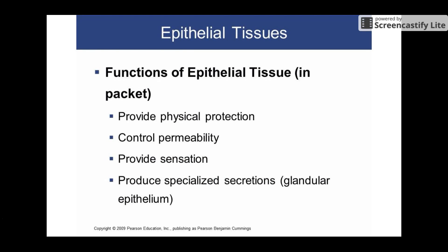In terms of functions, they vary a lot depending on the epithelial tissue. Some are really permeable, some have almost no permeability. Some are very protective because they're nice and thick, some have almost no protection. So there's a wide, wide range of epithelial tissues — we're only going to be learning four of them this year, but there's a wide range depending on the individual tissues.